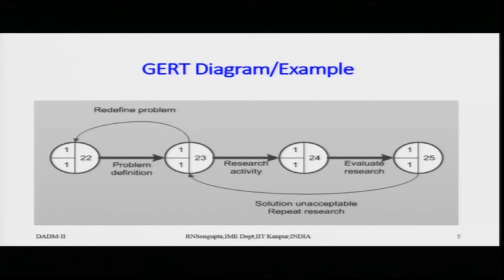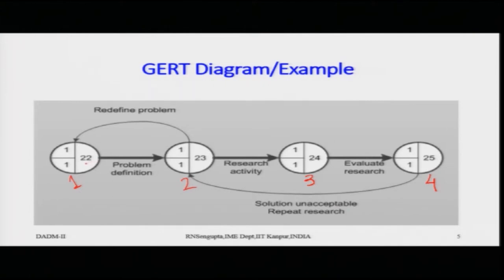Starting from the leftmost node, label them one, two, three, four — but in the overall problem description they might be node numbers 22, 23, 24, 25. There can be other nodes going out from or coming into these nodes. We will consider only the networks and process diagram arrows in which the network is connected, and define the problem accordingly.